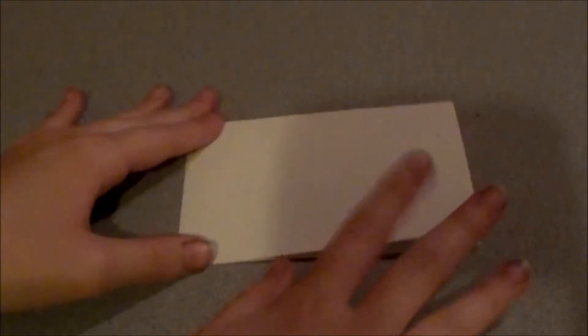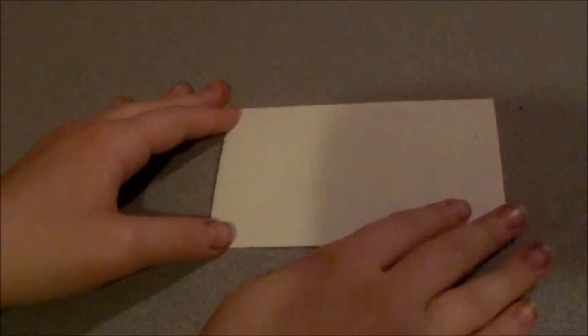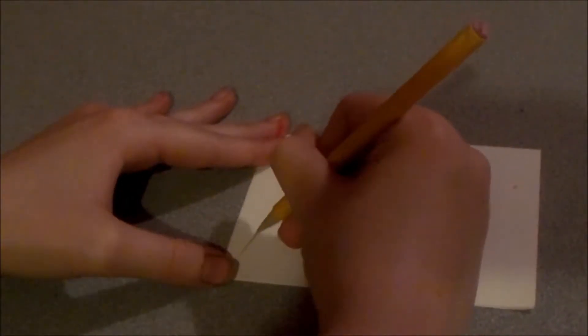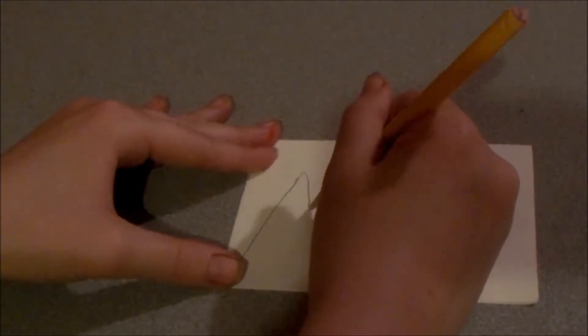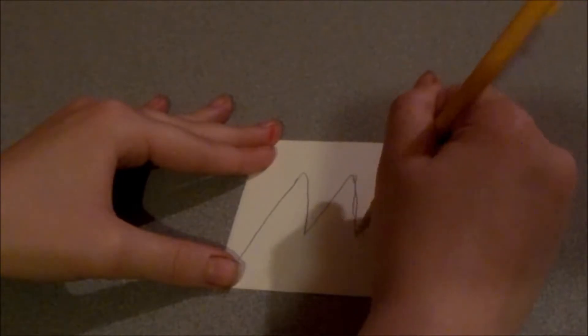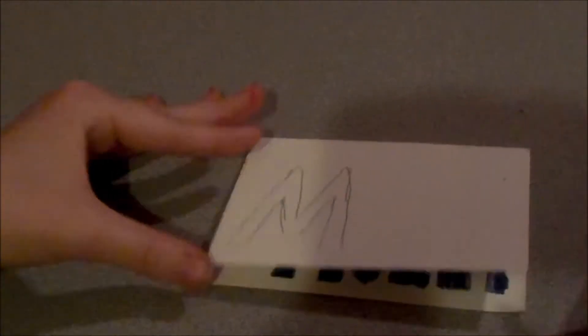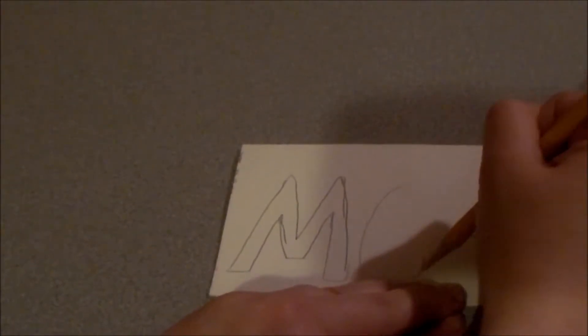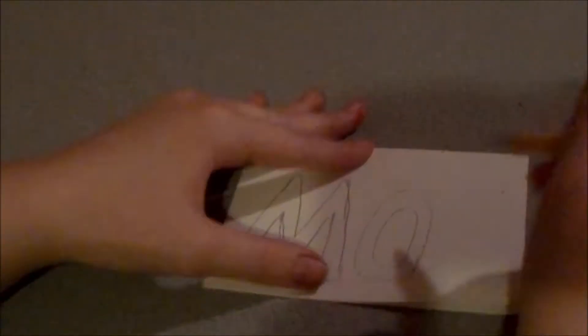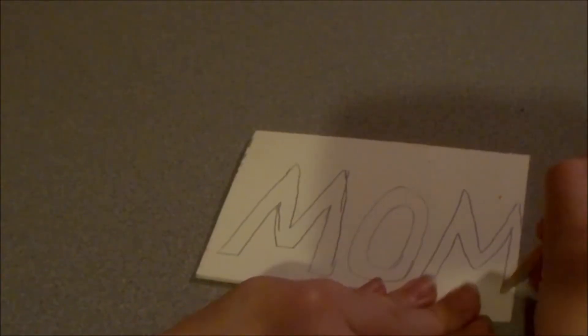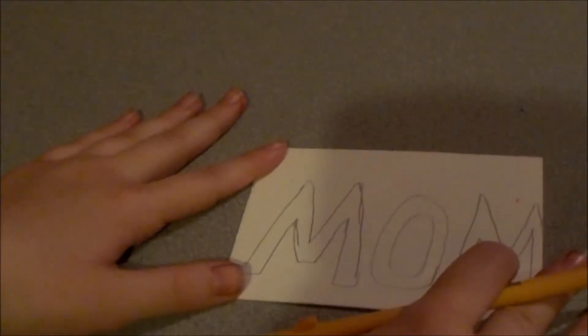The next one that I'm going to show you is going to say mom. And this is a technique where it's like the other one. It's block letters, but we're going to do little designs in it. So, we're going to start by making a little M. Well, it's a capital, but you know. Just like that. Nice and spindly. And then go like that. Same concept. The O is pretty simple. And then another M, same concept. Okay. And now I'm going to start with the one on the left.